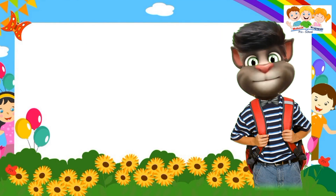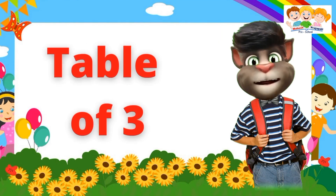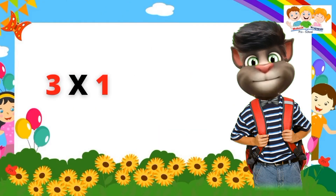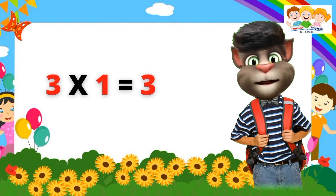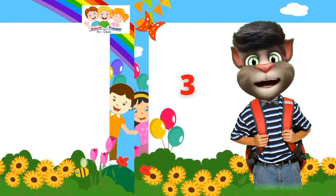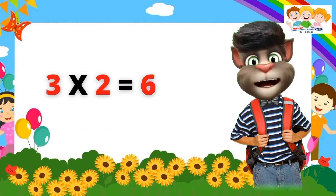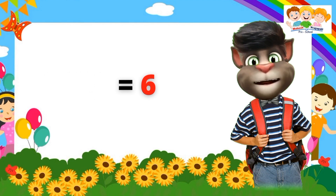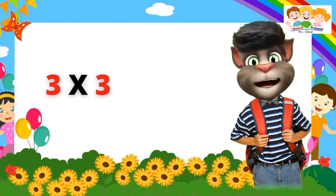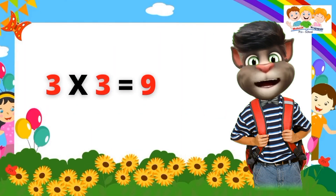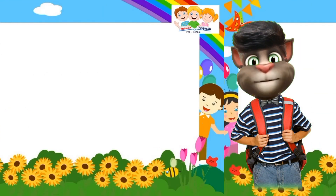Two tens are twenty. Table of Three. Three ones are three. Three ones are three. Three twos are six. Three twos are six. Three threes are nine.